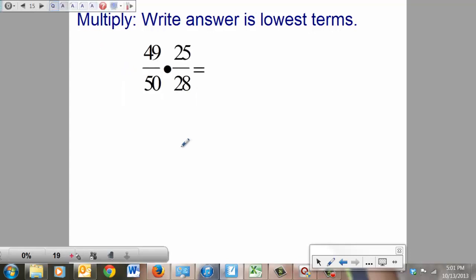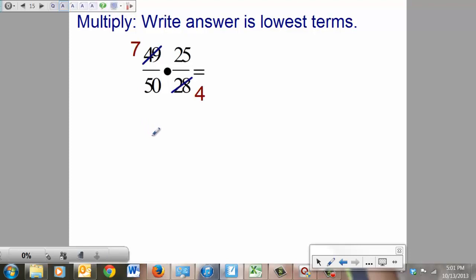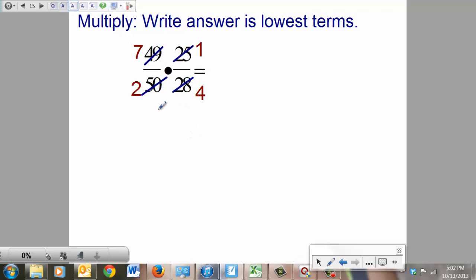That one's a little more exciting. Try that one on your own. See if you can find them all. Simplify before you multiply. All right, hopefully you paused it and did it. The obvious ones is going to be the 50 and the 25, but there's another sneaky one in there. 7 goes into 49 seven times. 7 goes into 28 four times.